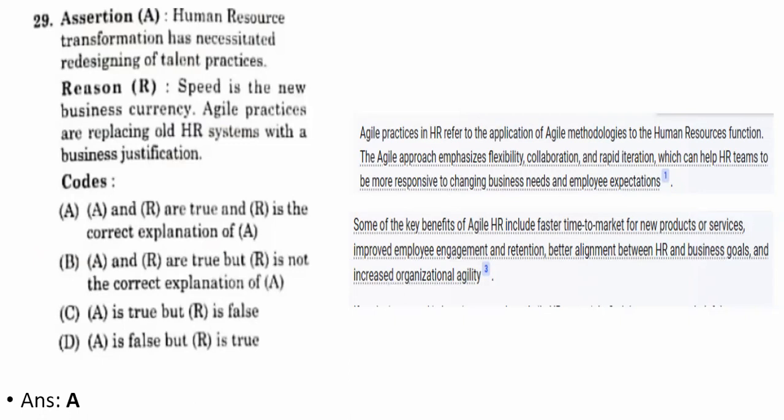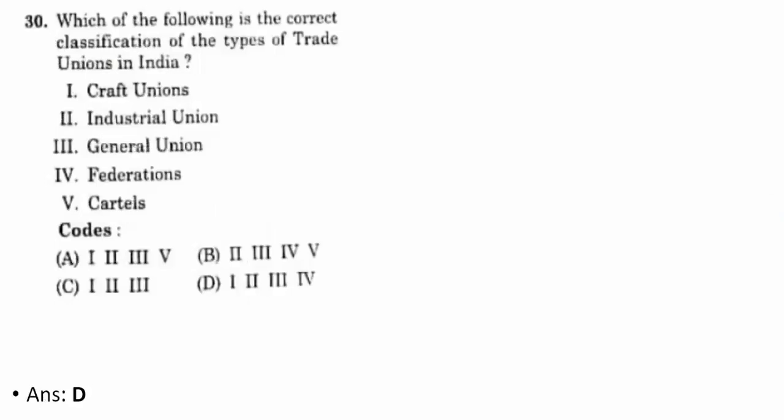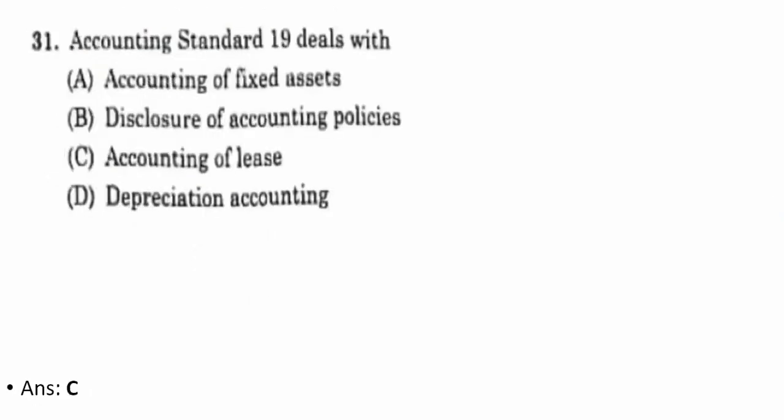Thirtieth question: which is the correct classification of types of trade unions in India? The correct option is D — craft union, industrial union, general union, and federations. Cartel is not a type of trade union, so it is removed. Options one, two, three, and four is the correct answer.